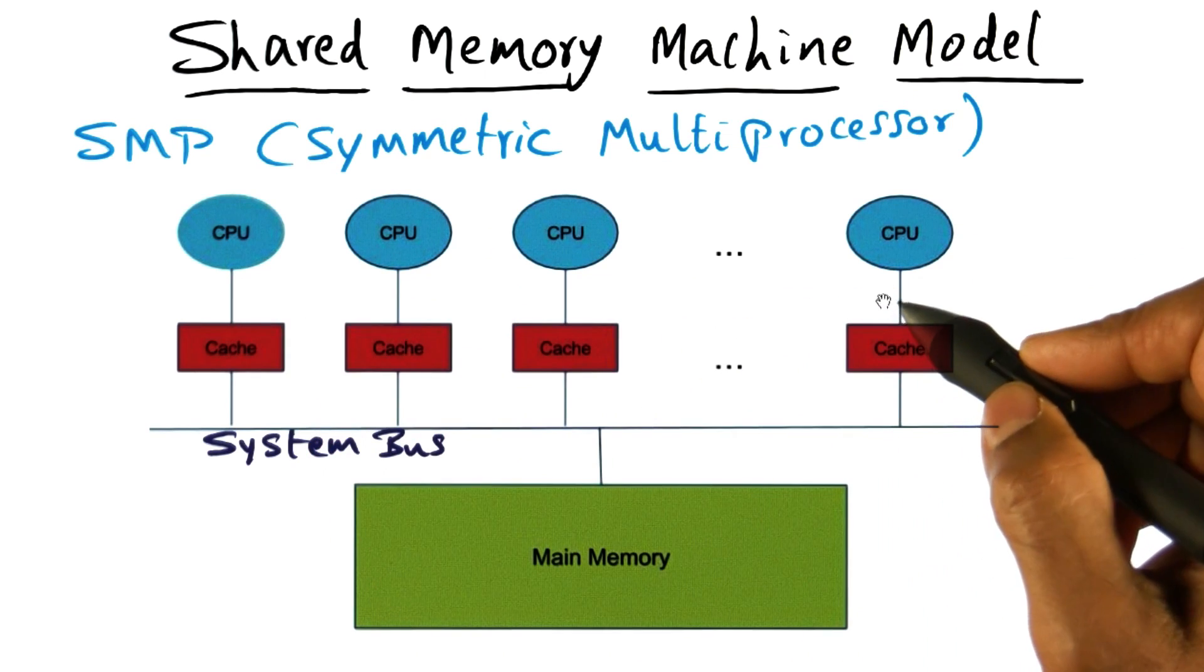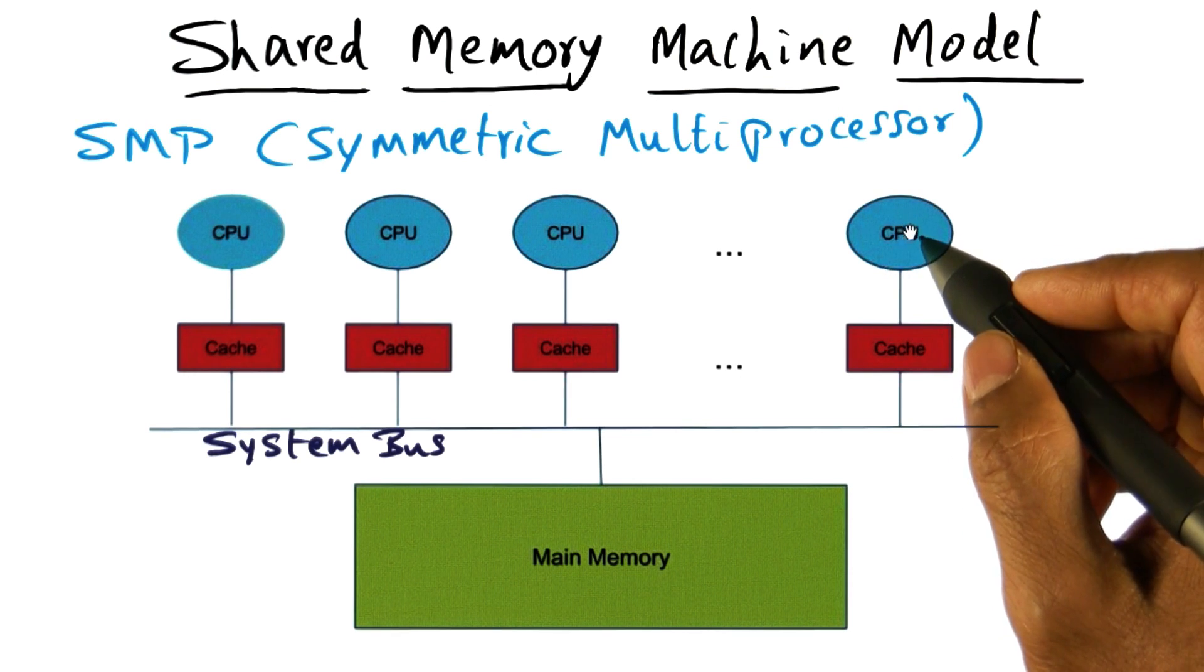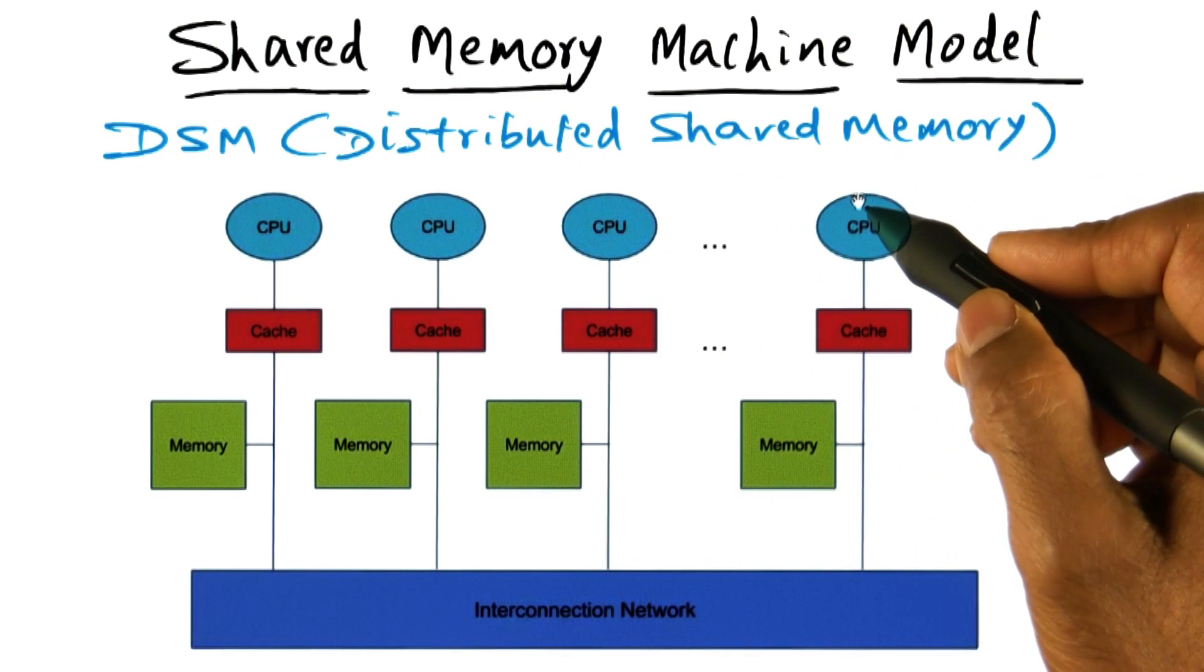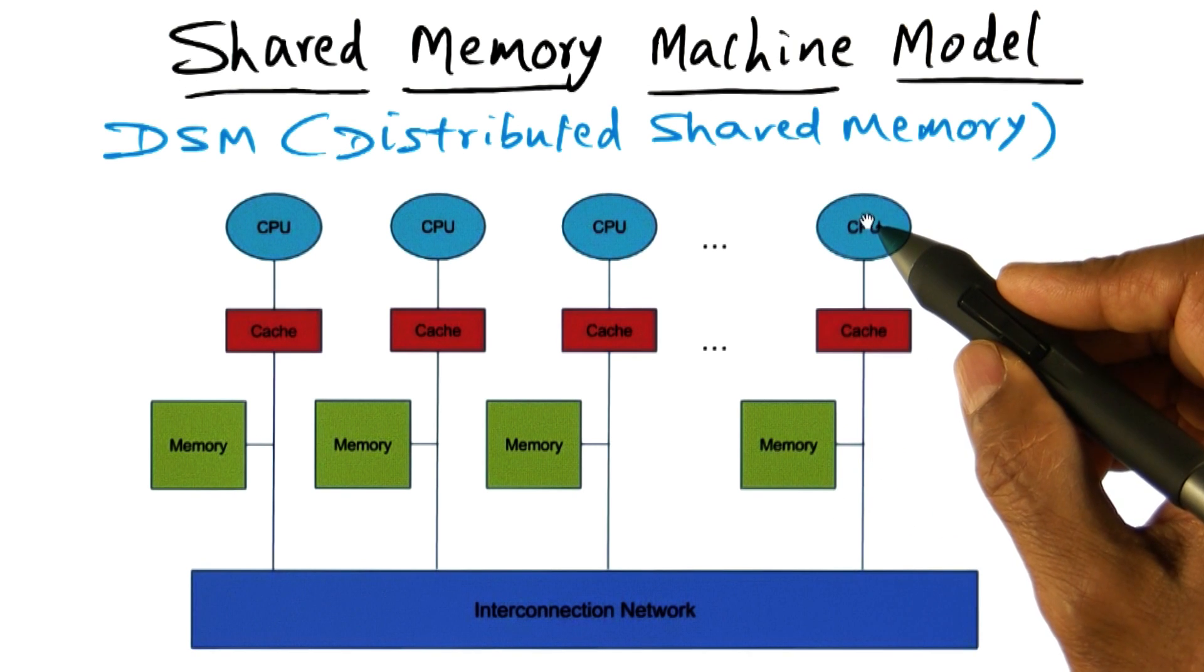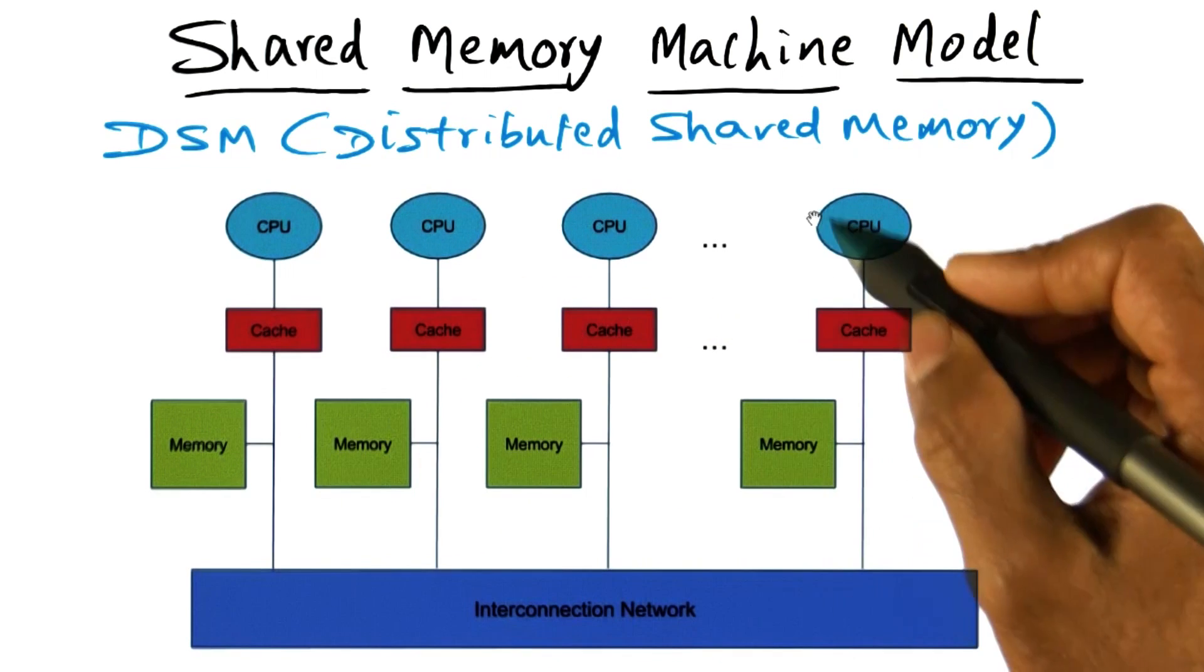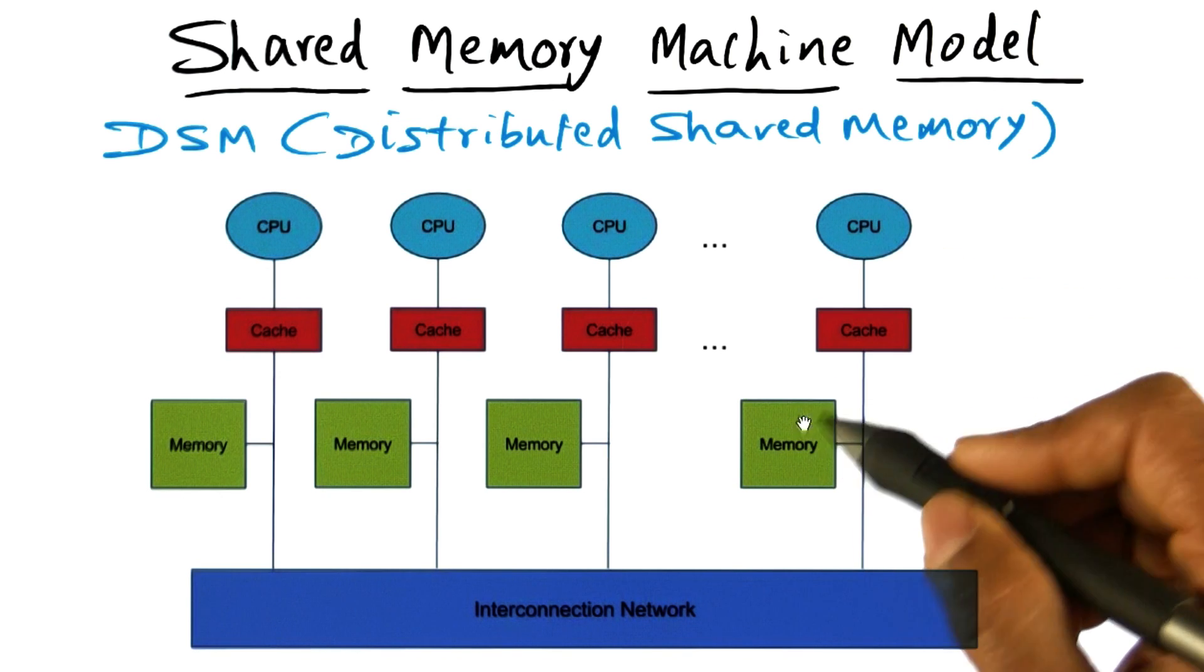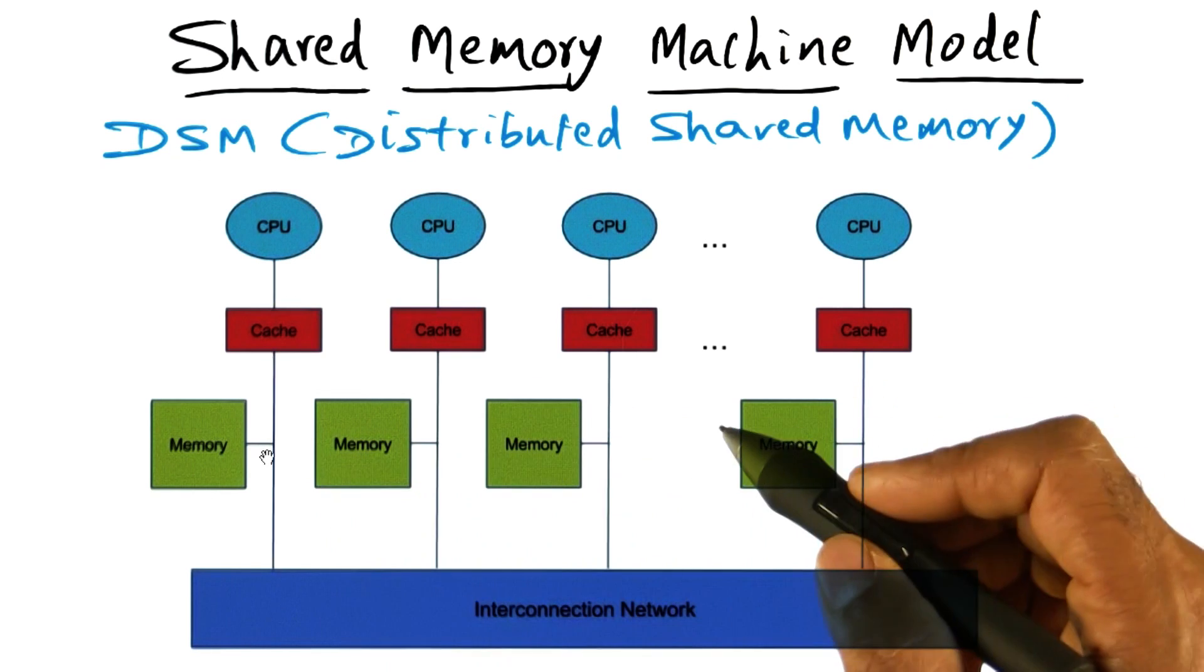We'll talk more about the shared memory machine and the caches in a minute. The third style of architecture is called a distributed shared memory architecture, or DSM for short. Here you have a piece of memory associated with each CPU. At the same time, each CPU is able to access all of the memories through the interconnection network. It's just that access to memory close to a CPU is obviously faster than accessing memory farther away, which has to be accessed through the interconnection network.